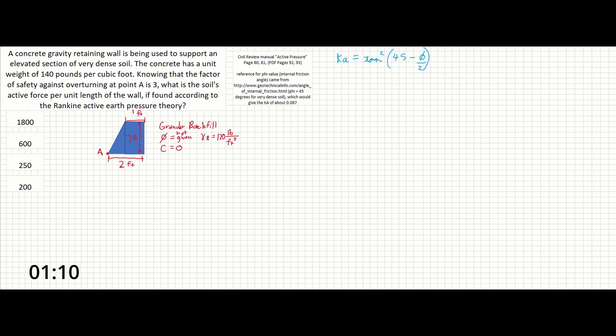The second equation we're going to pull off of page 80 is going to be the active force within depth Z. So that's going to be PA equals our term found above, KA times gamma times the depth Z squared over 2. PA is going to be active pressure, and that is what we're going to be solving for in this problem.